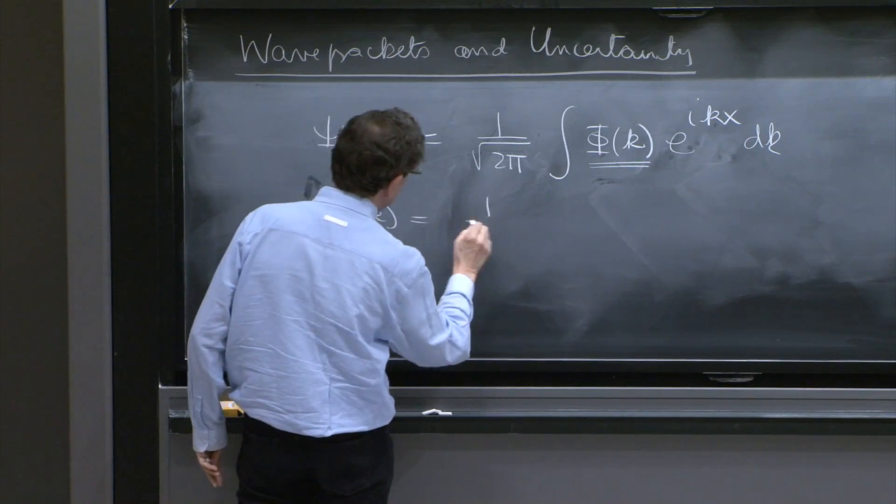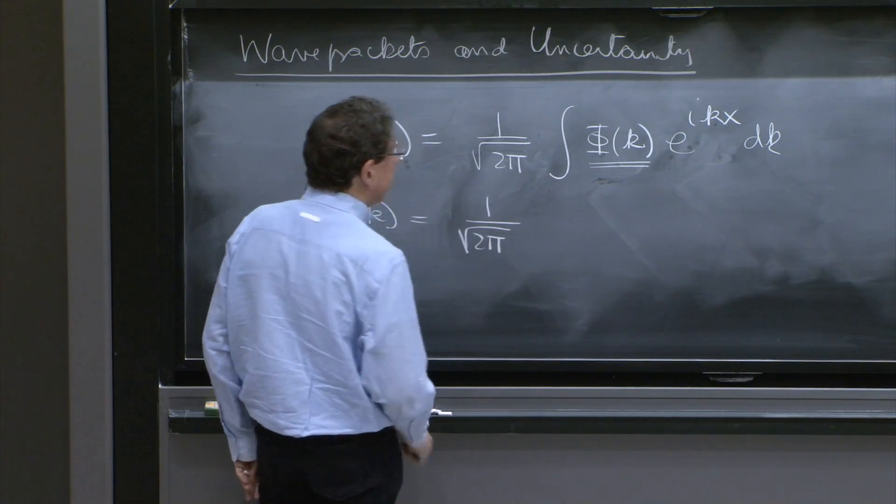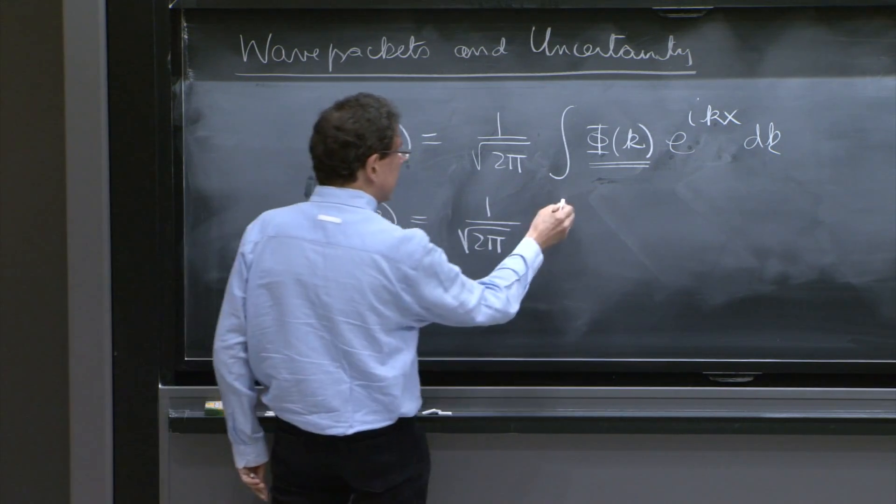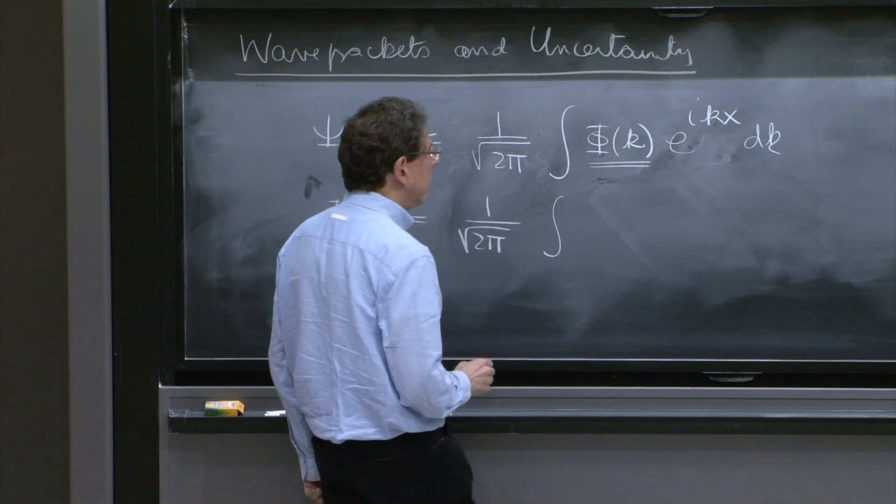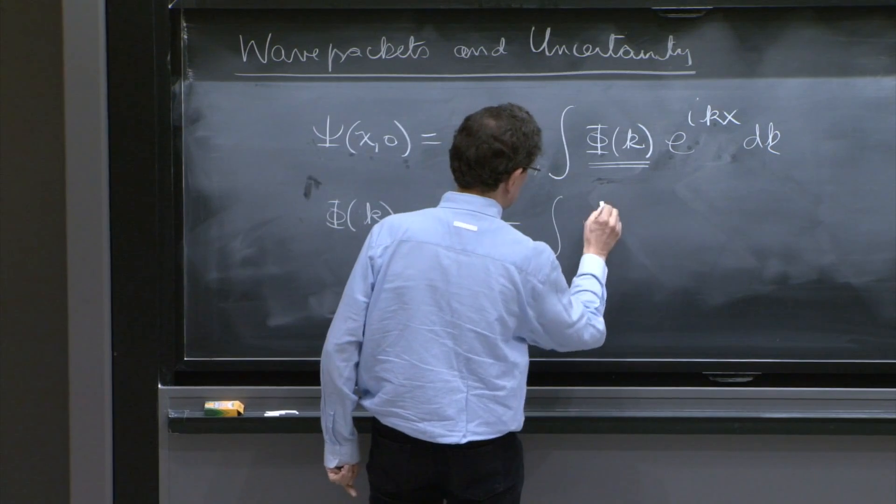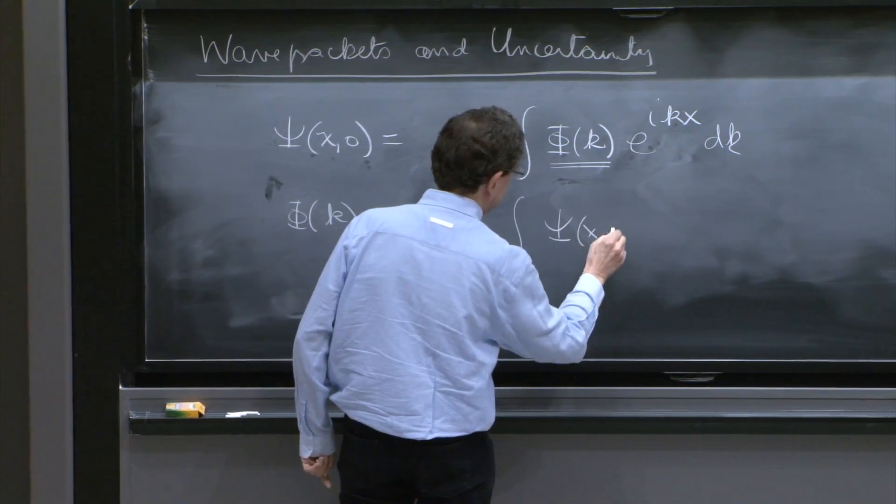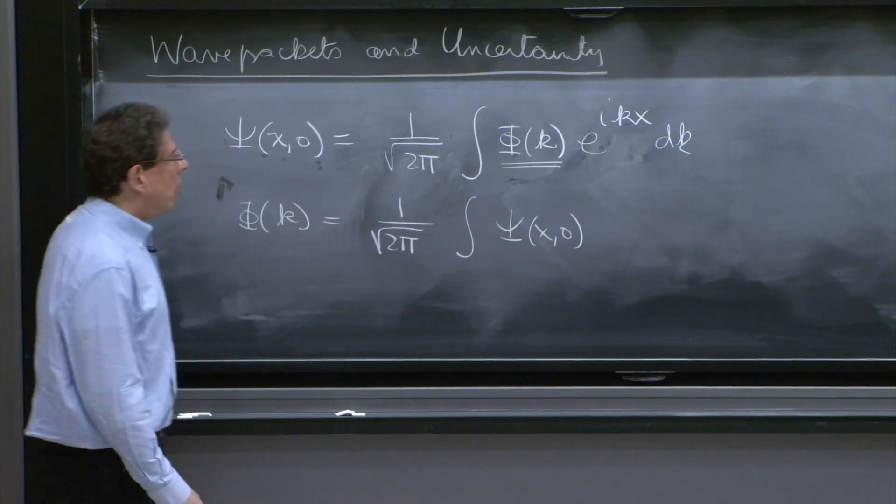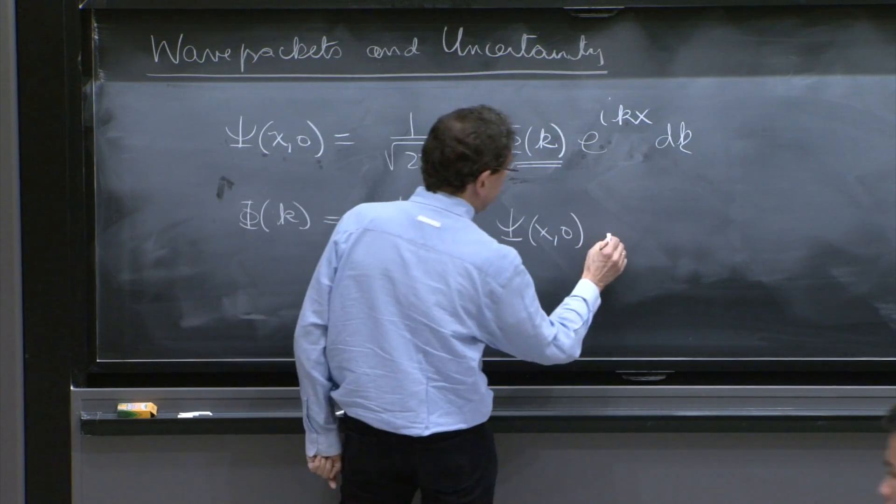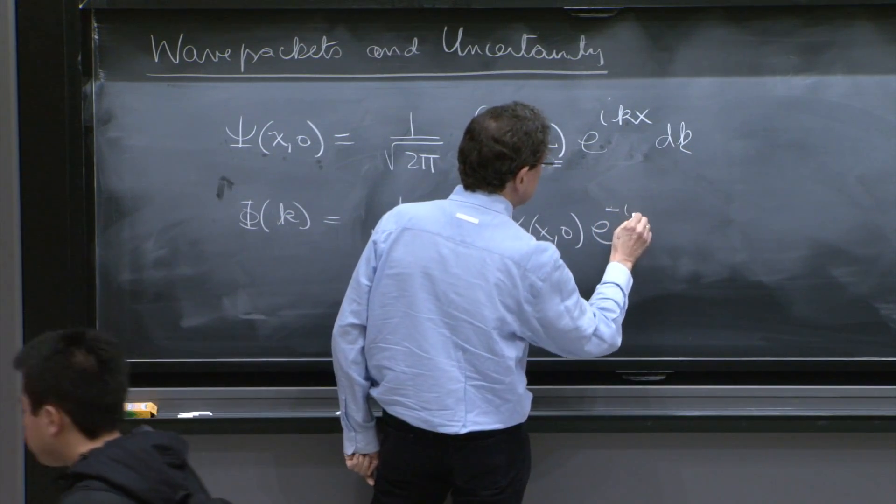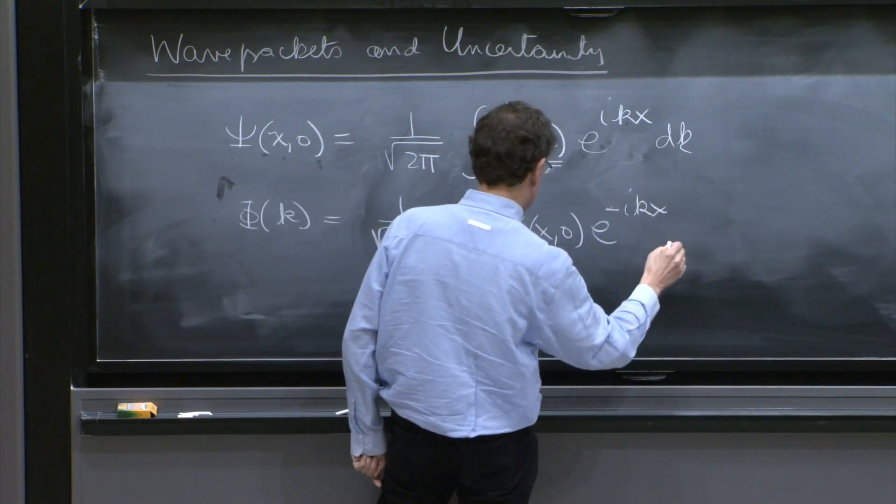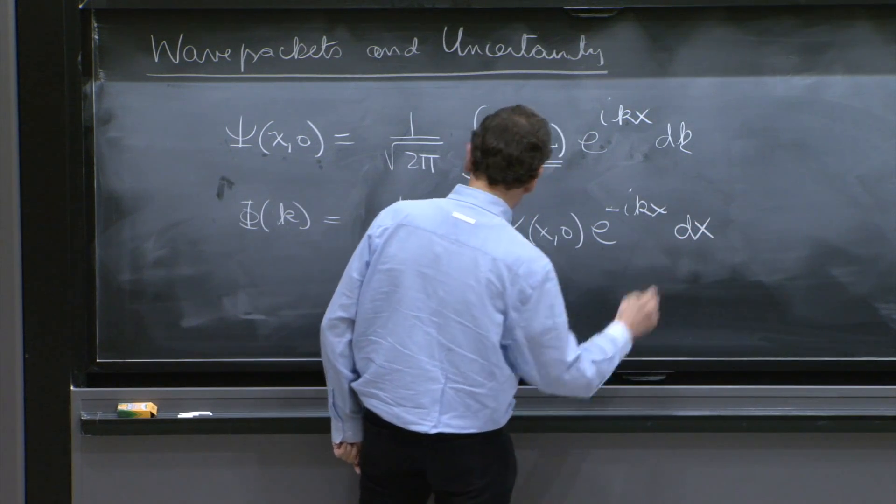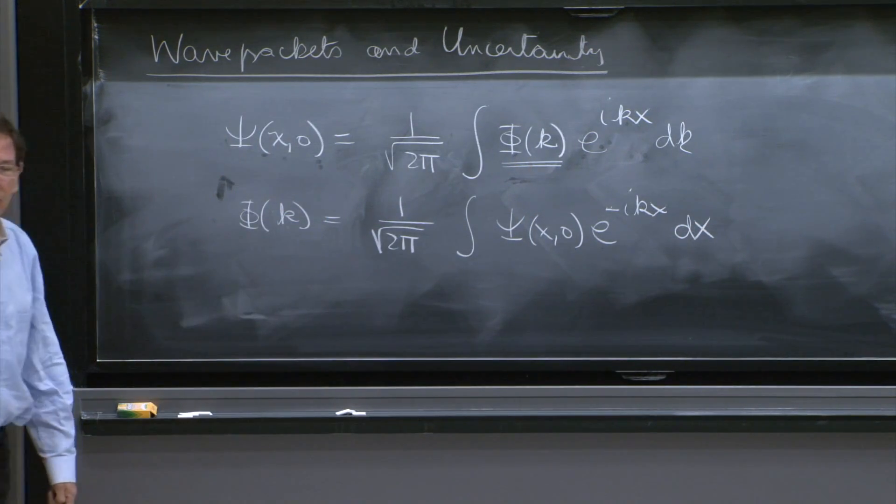And it's a very similar formula: 1 over 2π, this time an integral over x. So you take this ψ of x0 that you know, and then multiply by e to the minus ikx, integrate over x. And out comes this function of k.